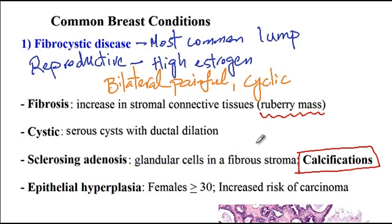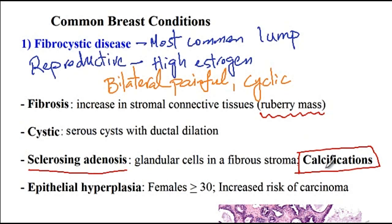Ductal carcinoma does present with calcifications on mammogram, but other conditions like fibrocystic disease — specifically the sclerosing adenosis type — as well as breast trauma also present with calcifications. So not necessarily any time you see calcification does it mean cancer.